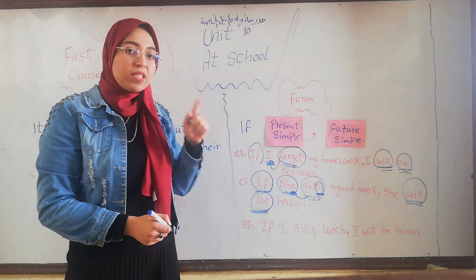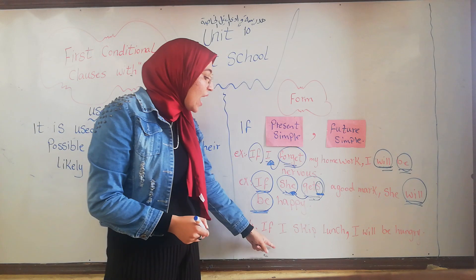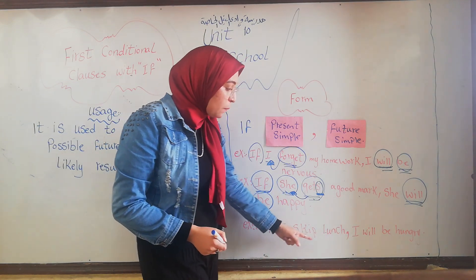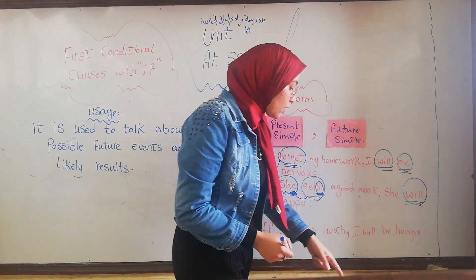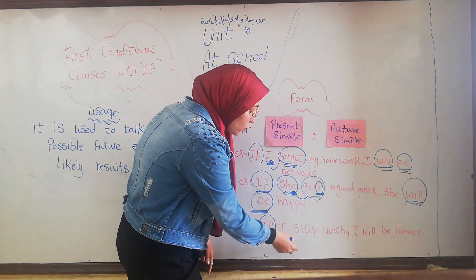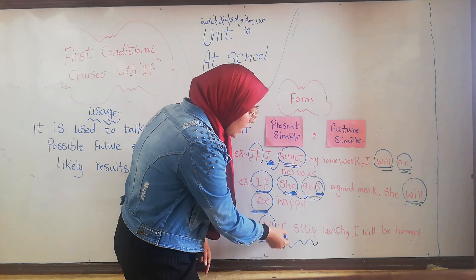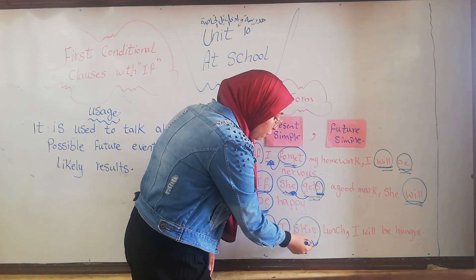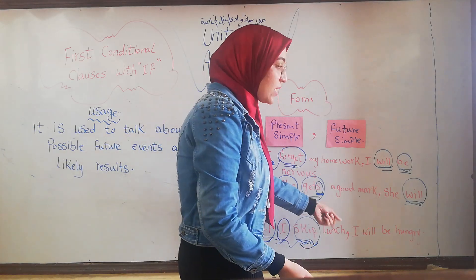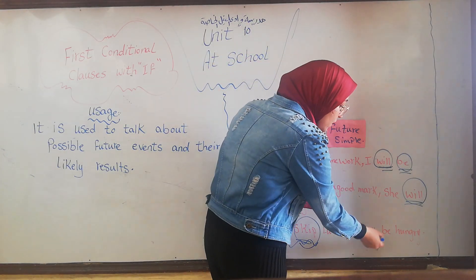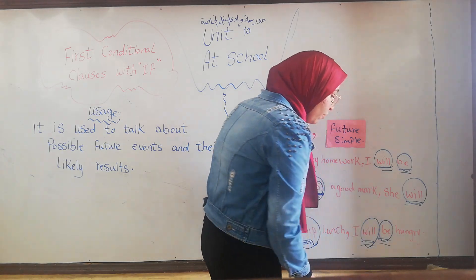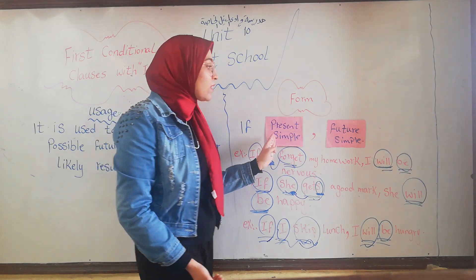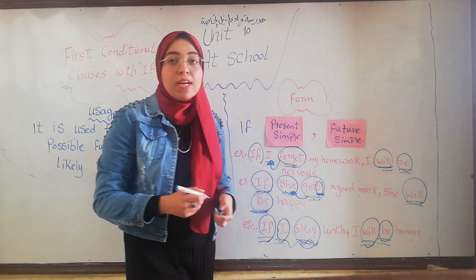The third example: if I skip class, I will be angry. After if, we put present simple — the subject I followed by the verb in its base form. The second clause uses will + verb in its base form. So the first clause is present simple, and the second is future simple.